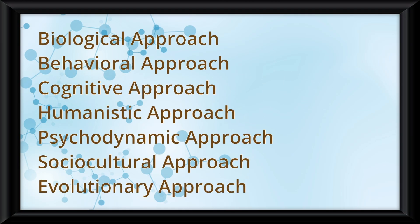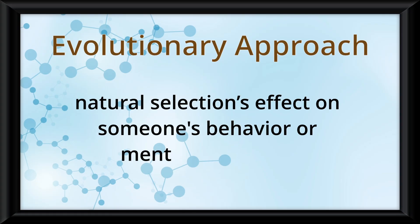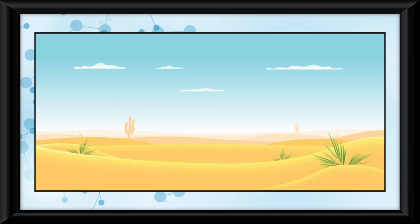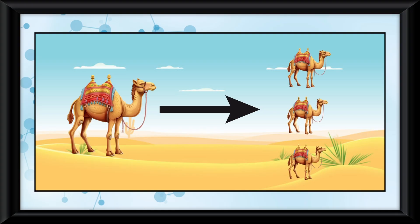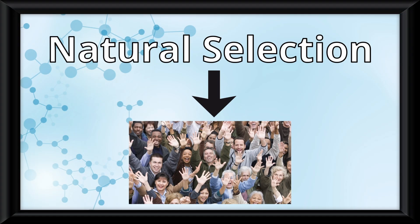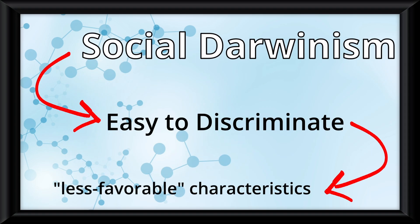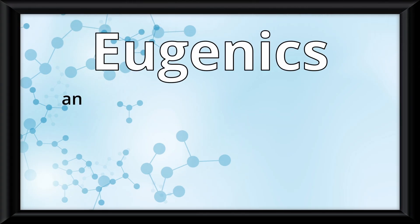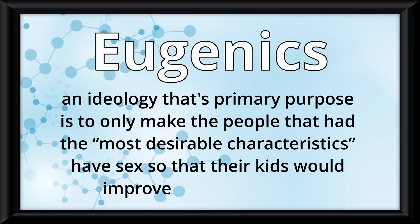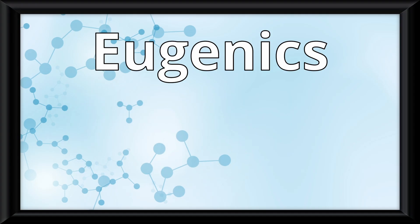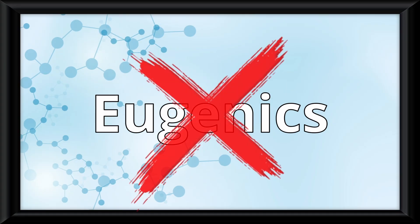There are many different approaches to psychology that all have their own answer to this question. For example, the evolutionary perspective championed by Charles Darwin explores natural selection's effect on behavior or mental processes. Natural selection is the evolutionary principle that animals more adapted to their environment are more likely to survive and pass on their genes. The issue arises when you apply this to society, turning from Darwinism to social Darwinism, making it easy to discriminate against those with less quote-unquote favorable characteristics. Eugenics is a prime example — an ideology focused on only allowing people with desirable characteristics to reproduce, used as justification by the Nazis in World War II, and later discredited as unscientific.